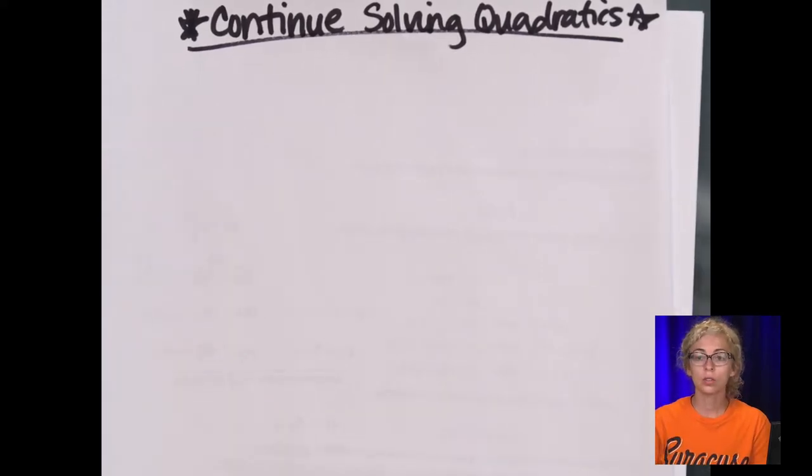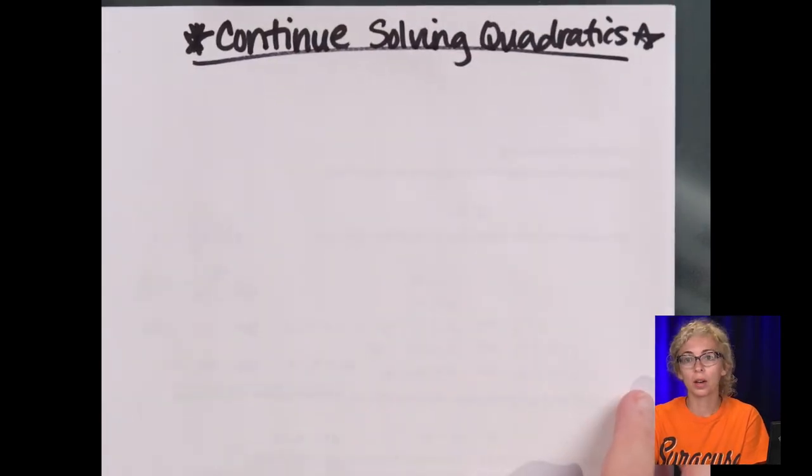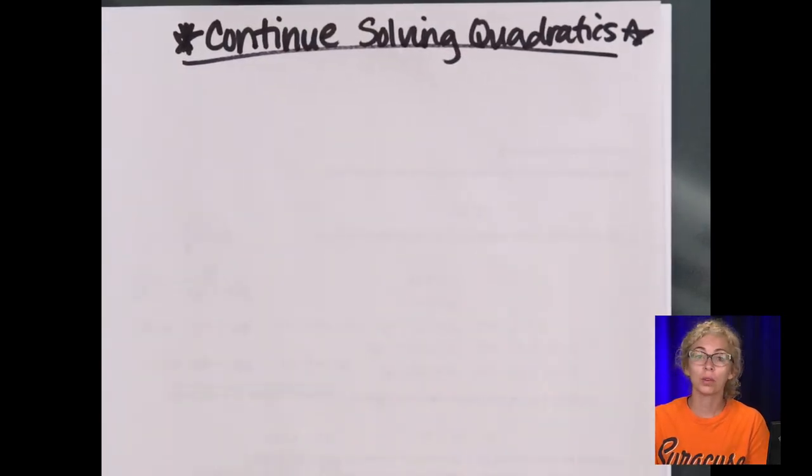Okay, so we're going to continue solving quadratics today, but before we do that, we're going to review how to simplify a radical because radicals are the two methods that we're doing today. The inverse method, so the opposite of squaring is square root, so we need to look at radicals for square roots, and then the quadratic formula.